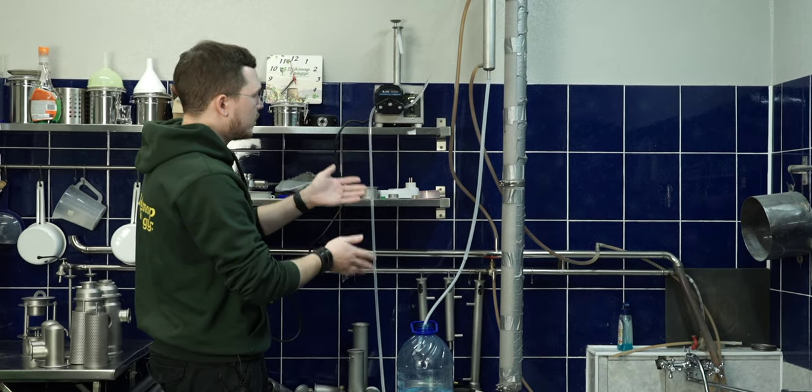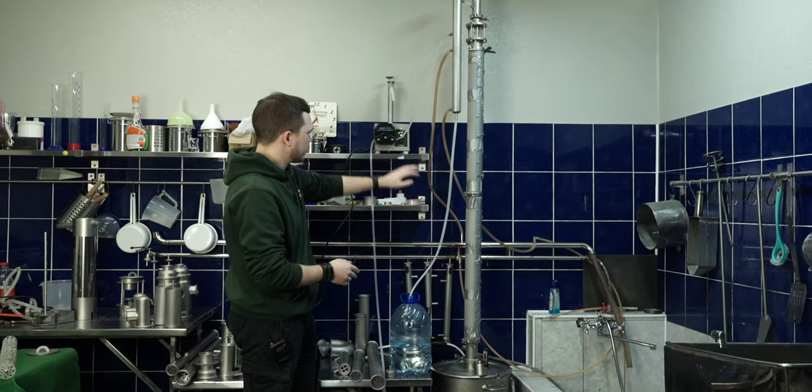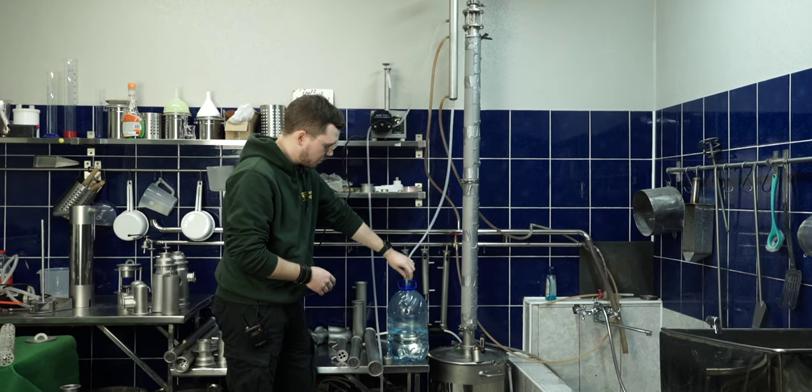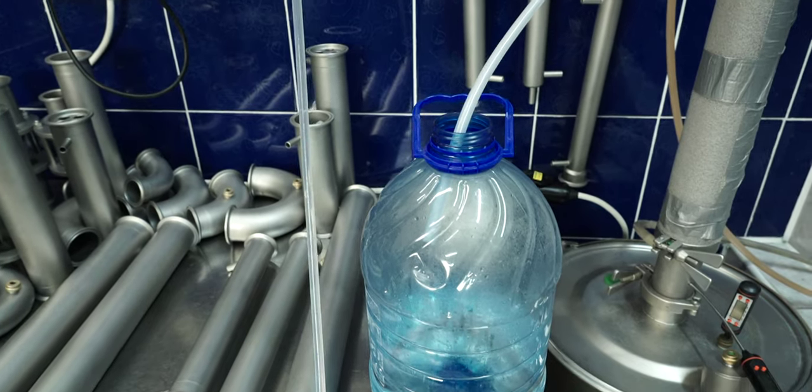So over here we have a column and a boiler, peristaltic pump, and mash. Over here we are already collecting low wines.